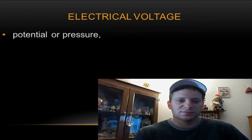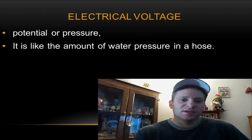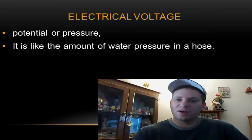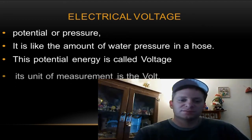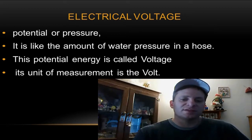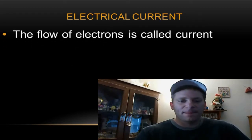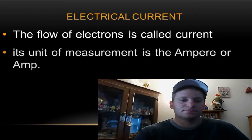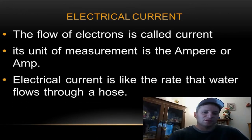Electrical voltage is the potential or pressure — it's like the amount of water pressure in a hose. The potential energy is called voltage, and its unit of measurement is volts. Electrical current: the flow of electrons is called current, and its unit of measurement is the ampere, or amp.